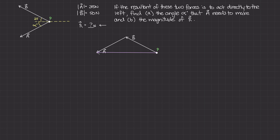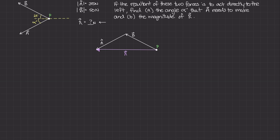The resultant force starts at P and ends where A is. You can see that it is horizontal — I've drawn this triangle as accurately as I could, knowing that the direction R is making is exactly to the left. So I'm going to fill out some information here: stuff that we already know. We know that the magnitude of A is 35 newtons, and we know the magnitude of B is 50 newtons.